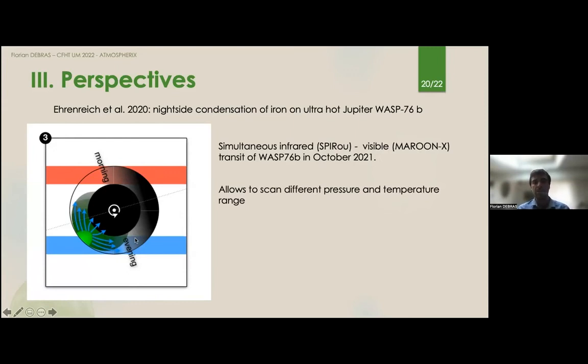What's interesting is that in October 2021, we secured a simultaneous transit of this planet, both in the visible, where iron is detectable, and in the infrared with SPIRou, where we can see the water and the carbon monoxide. We are still studying it, but basically with these two probes in infrared and visible, we have the chance to scan different pressure and temperature ranges, and hopefully to be able to decipher between the circulation, clouds, or an eccentricity origin for the peculiar observation of Ehrenreich et al. in 2020.